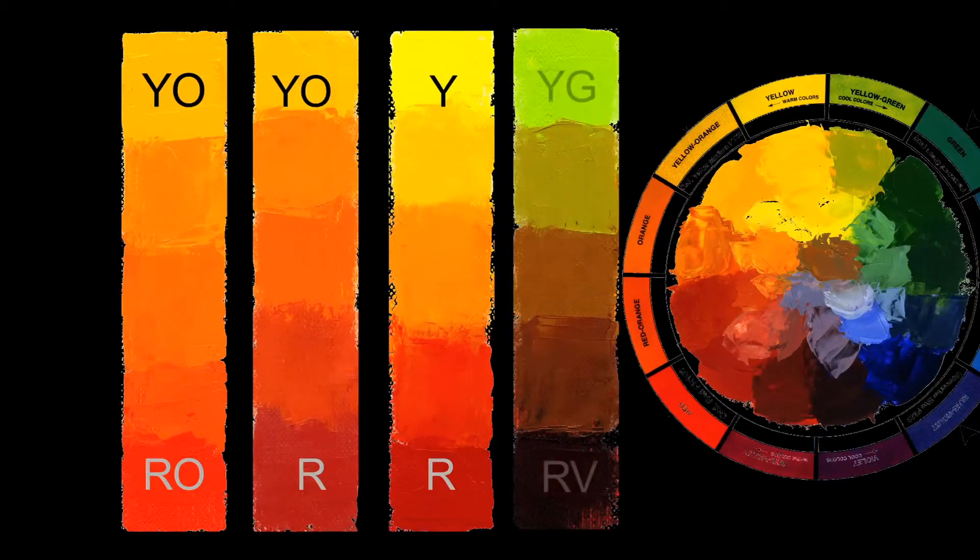To create a neutral or low chroma orange, we choose a yellow and red that are each two steps away from orange on the color wheel: yellow-green as a cool yellow and red-violet as a cool red. This range of colors now looks similar to a yellow ochre or burnt sienna color. The orange has been neutralized by the blue bias on each of the contributing colors.